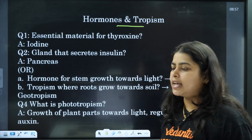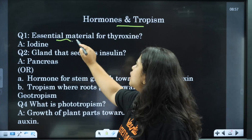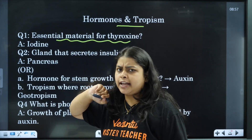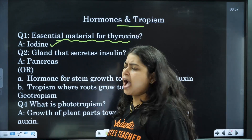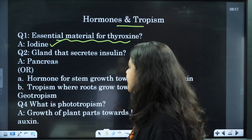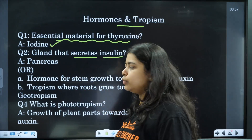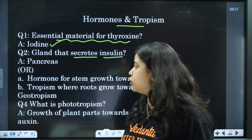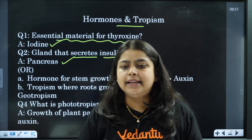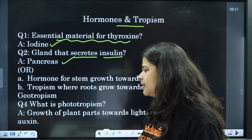Next: hormones and tropism. What is the essential material for thyroxine? Iodine — that is the answer you can write down easily. The gland that secretes insulin: the pancreas secretes insulin completely.